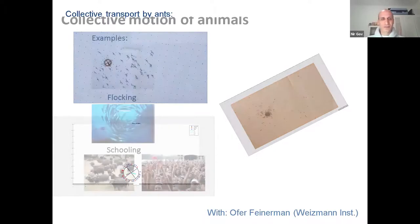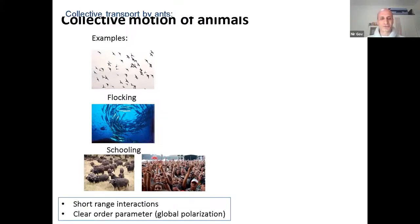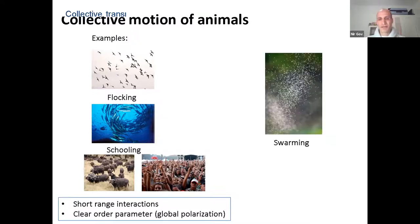That is with the introduction to swarms. So there are generally two classes of behavior of groups of animals. The more common behavior which you are more familiar with because it's very striking is flocking of birds or schooling of fish or people in a concert or wildebeest in the savanna. You have short range interactions between the entities, between the individual animals. And there is a clear order parameter, which is a global polarization of the group as it is moving together towards its destination.